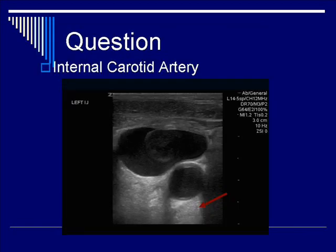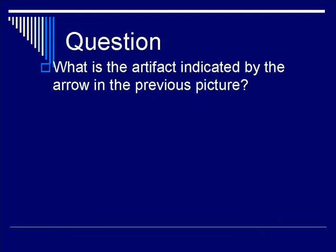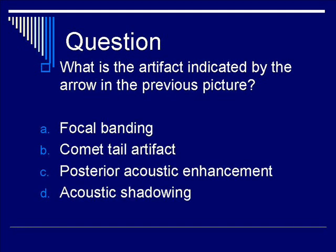Let's do a question. This is the transverse view of the carotid artery and internal jugular vein that you saw earlier. What is the red arrow pointing to in this picture? Specifically, what is the artifact indicated distal to the internal carotid artery? Here are the choices: A, focal banding; B, comet tail artifact; C, posterior acoustic enhancement; or D, acoustic shadowing?